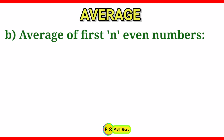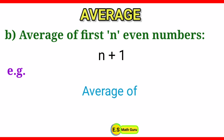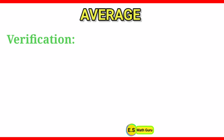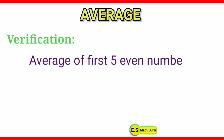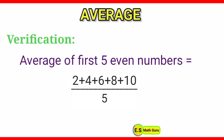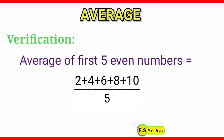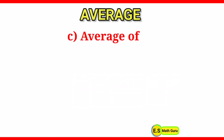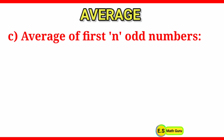Next, the shortcut method to find the average of first N even numbers is N+1. For example, the average of first 5 even numbers is equal to 5+1, which is equal to 6. Now let us verify it: the average of first 5 even numbers is equal to (2+4+6+8+10)/5, which is equal to 30/5, which gives 6. Therefore it is verified.